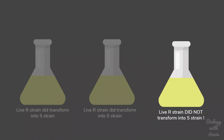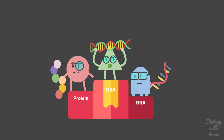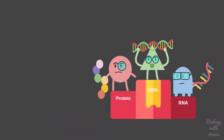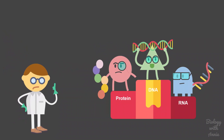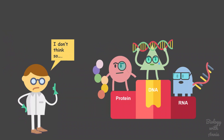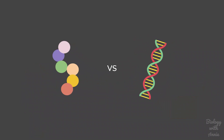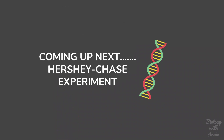This experiment showed that DNA is the transforming principle and that genetic information is present in the DNA. Despite providing definitive proof that DNA is the genetic material, the scientific community was reluctant to accept this conclusion. Scientists had believed for a long time that proteins were the genetic material, and hence they were hesitant to accept Avery's findings. In my next video, I will be explaining the Hershey-Chase experiment that finally helped scientists acknowledge DNA as the genetic material.